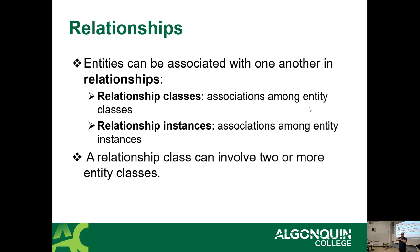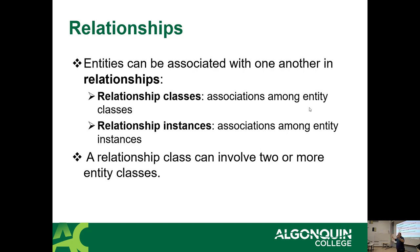A relationship can involve two or more entity classes. Going back to the student example, instead of a direct relationship between professor and student, we have a course section entity that has multiple relationships: a relationship to the profs, a relationship to the students, a relationship to a course, and maybe a relationship to a program.